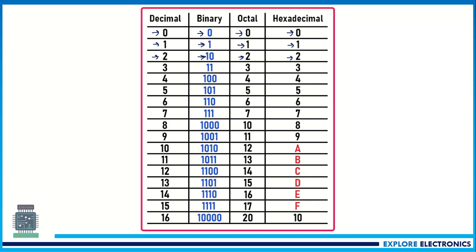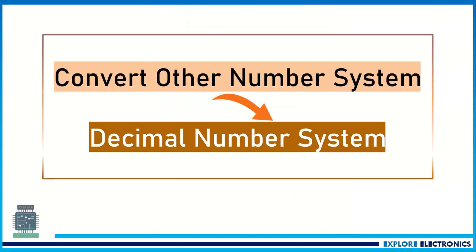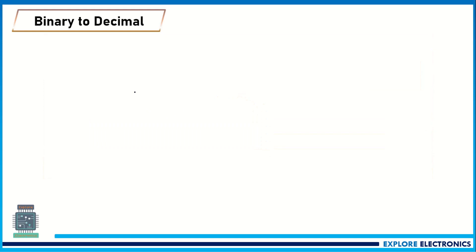Now let us understand how to convert other number systems into the decimal number system. First, let me take an example of binary to decimal conversion. In my example, I will have a binary number like 1 1 1 1 0 0 with base 2. This subscript 2 represents that it is a binary number.